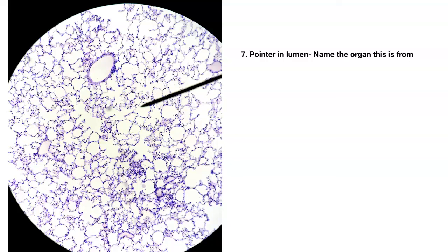Number seven — what organ is this from? Nothing else looks like this. These are little alveoli where we have gas exchange — we have millions of them. This is the lung. I just asked which organ this was — the answer is the lungs. But this is all simple squamous.